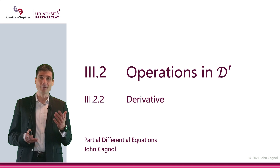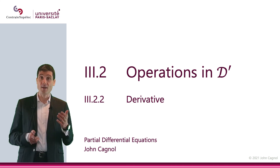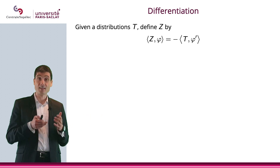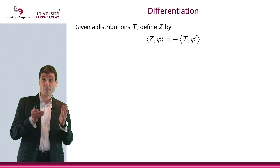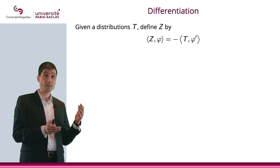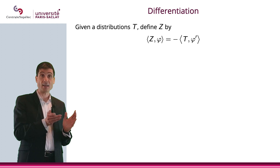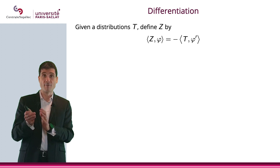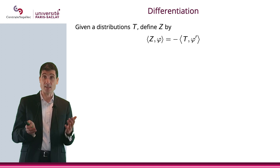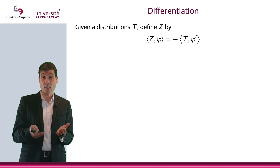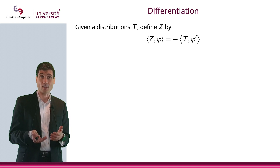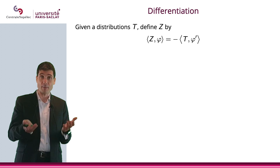In this video, we will define the derivative of a distribution. Let me consider a distribution t, and let's define z as the application from D to R, defined by z(φ) = -t(φ'). Now, φ is any test function in D, therefore I can differentiate it, so I can use φ' here, and t(φ') makes sense.